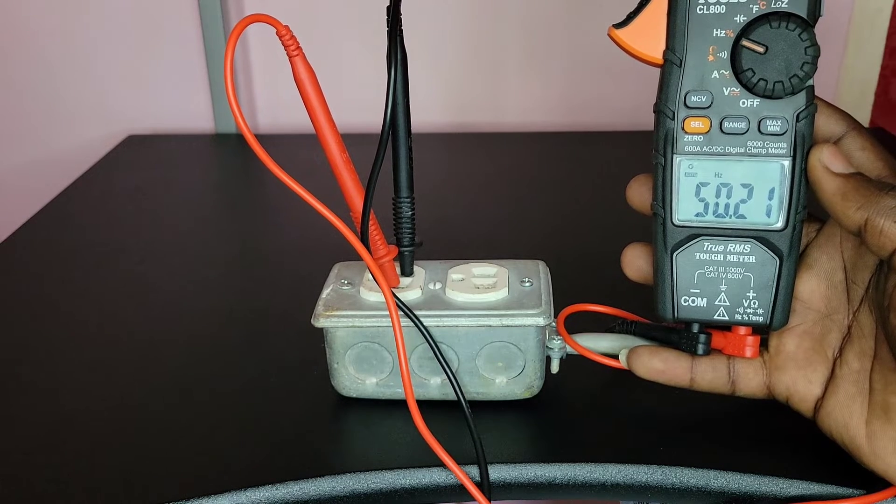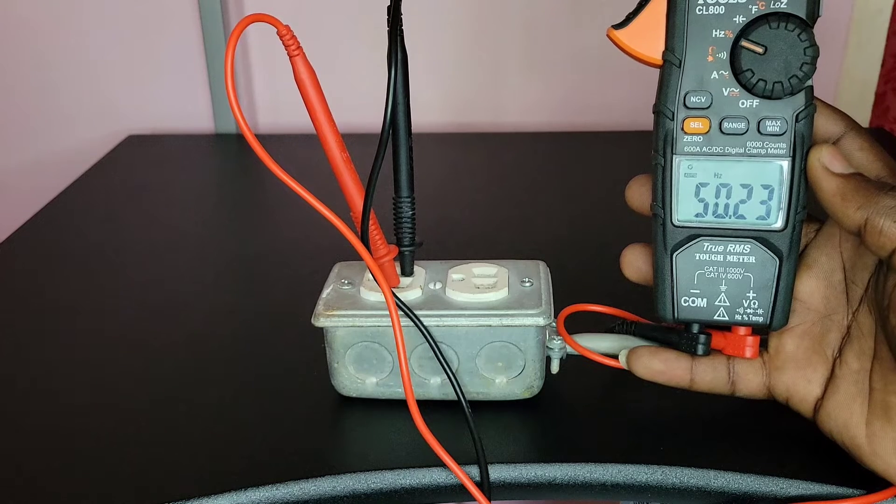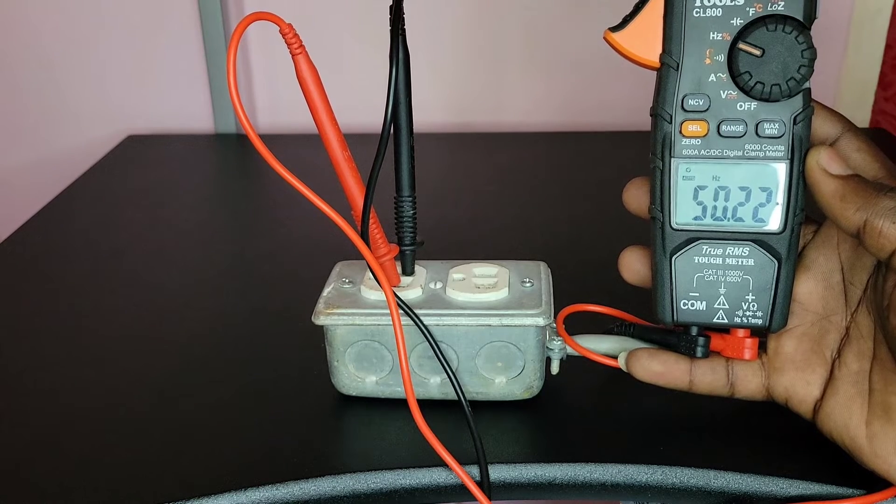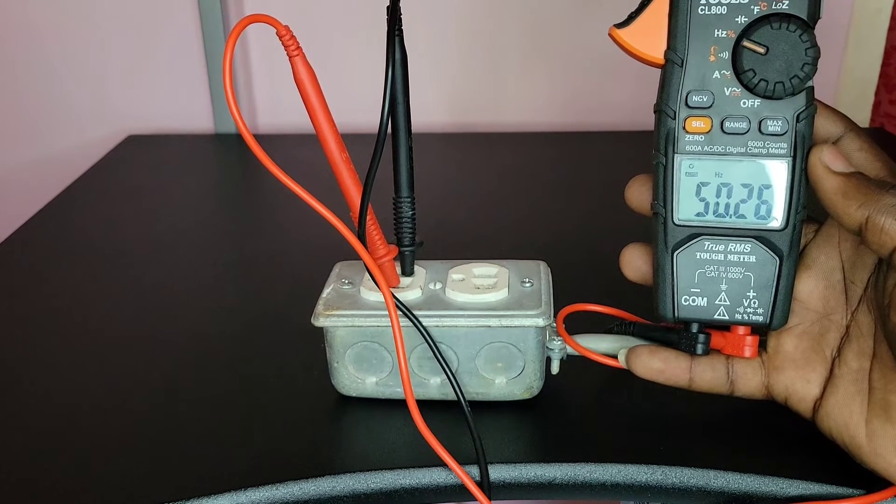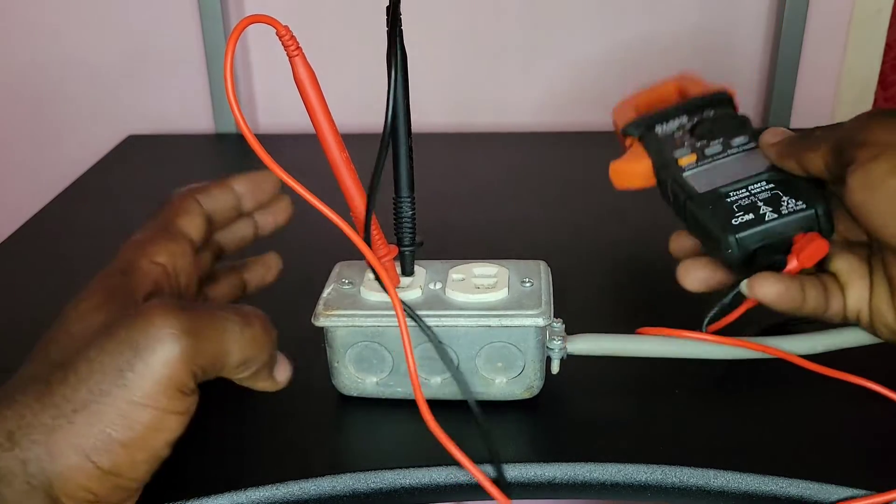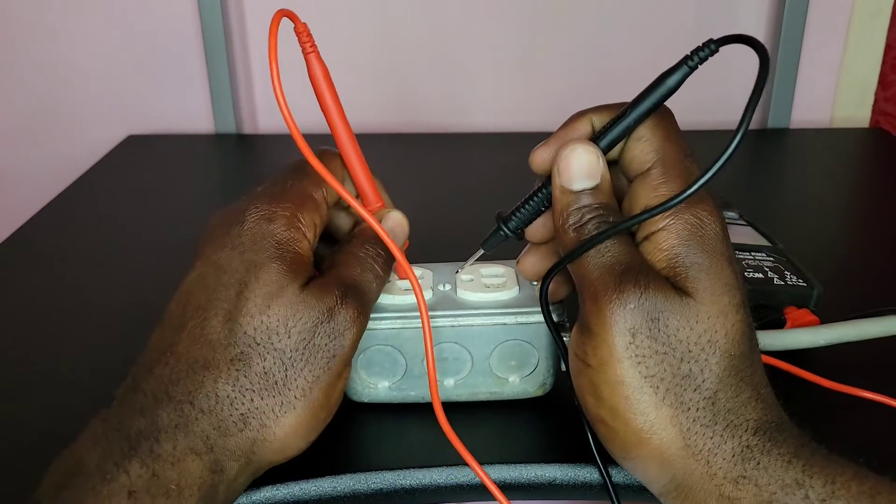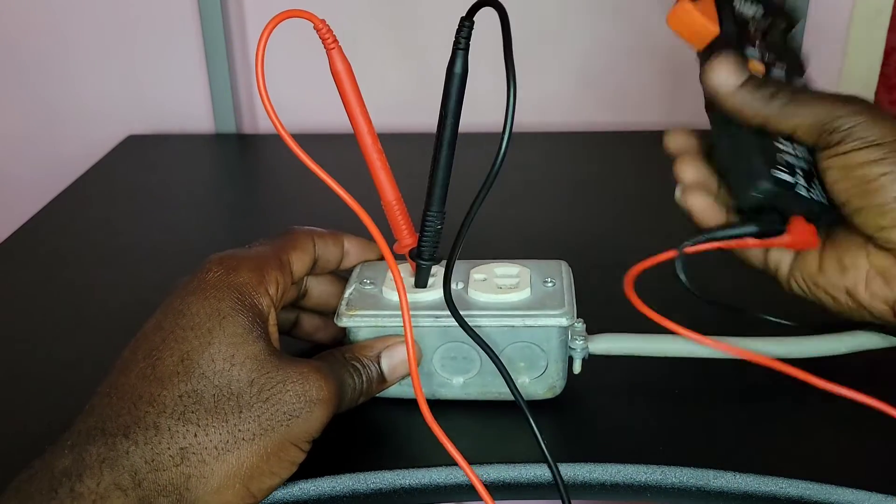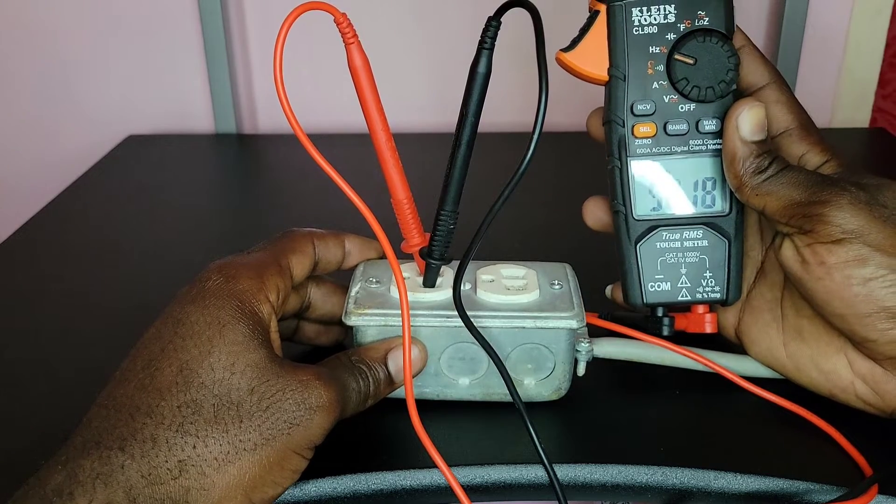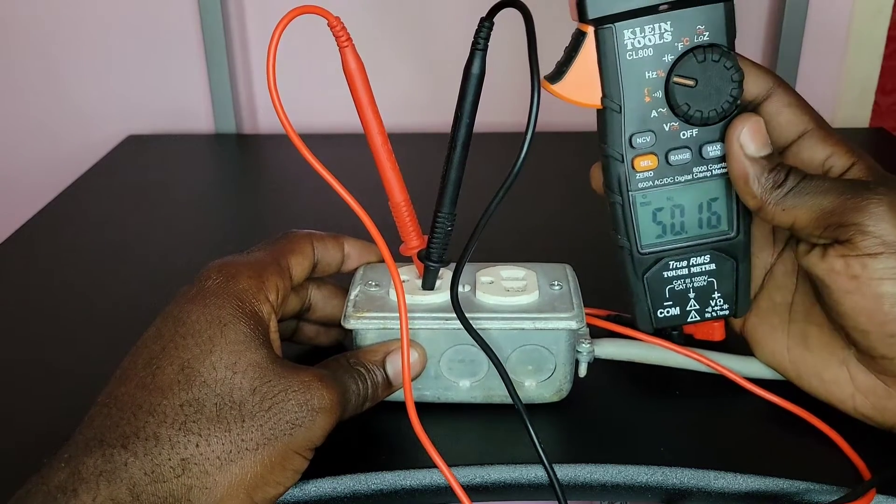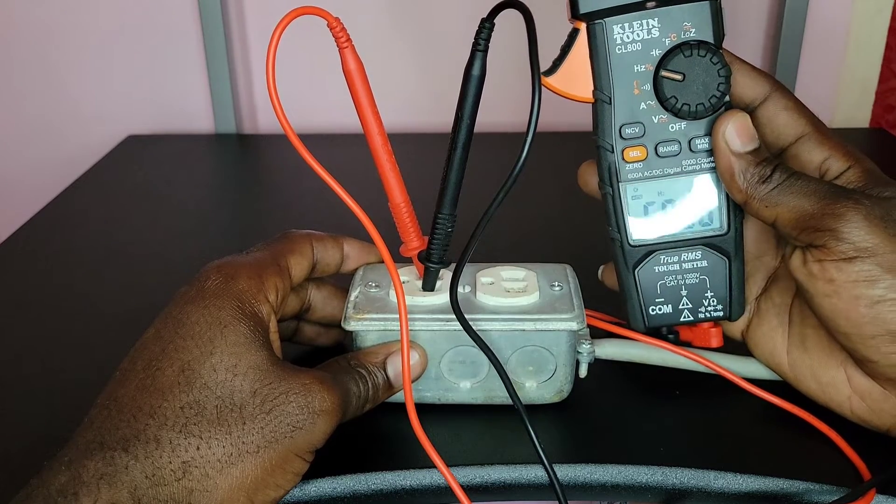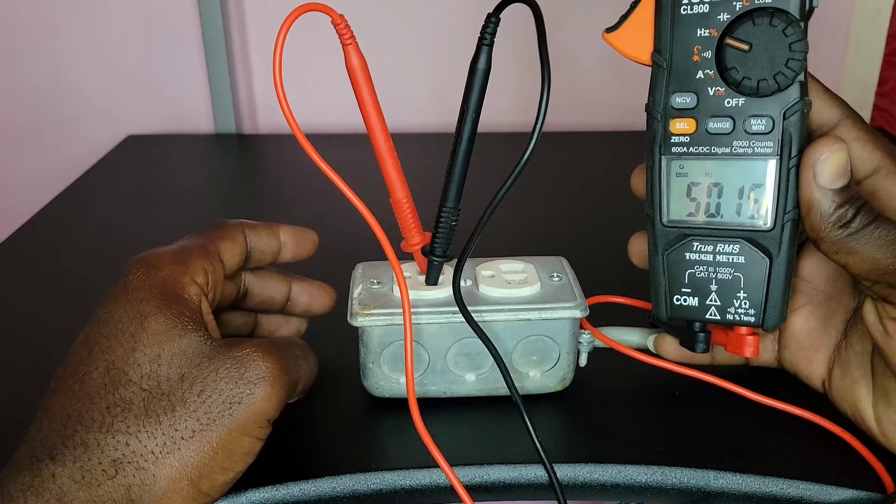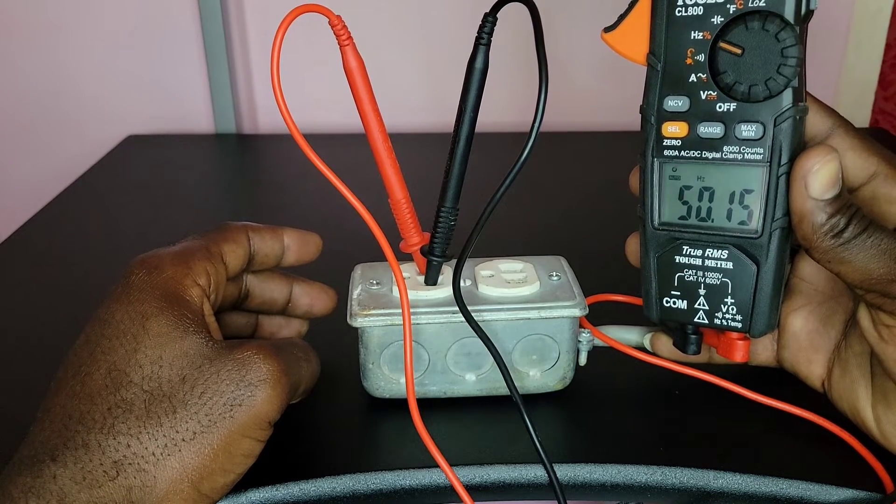Now it's relatively constant. I'm getting 50.23 thereabout, 50.2 thereabout. The polarity doesn't matter because if I go ahead and put the positive probe over the negative side and the negative probe over the positive side, the frequency is relatively the same. Now it's fluctuating and I'll just allow it to get constant. Now it is relatively constant.